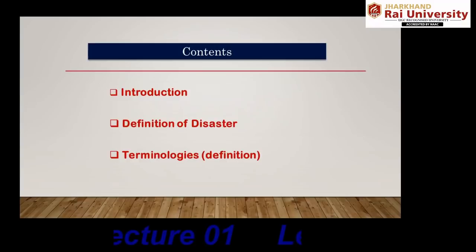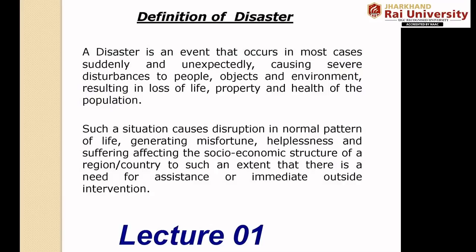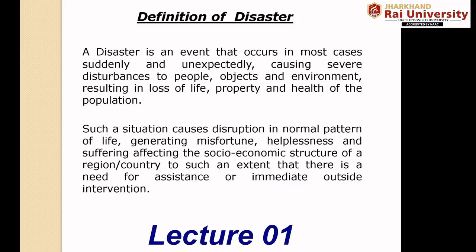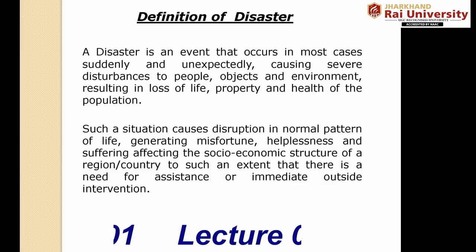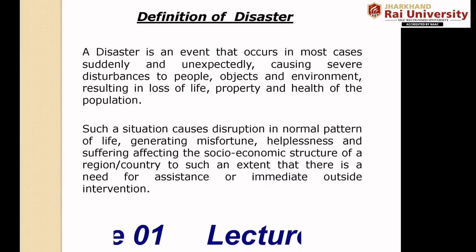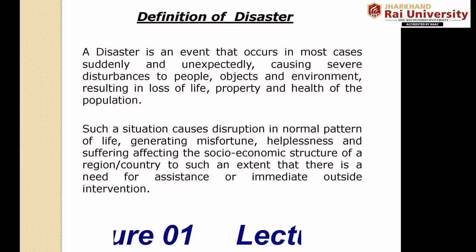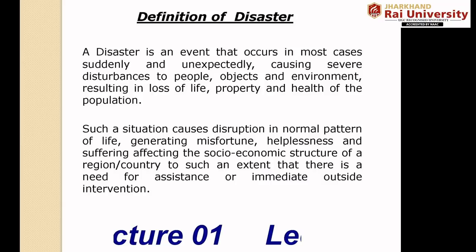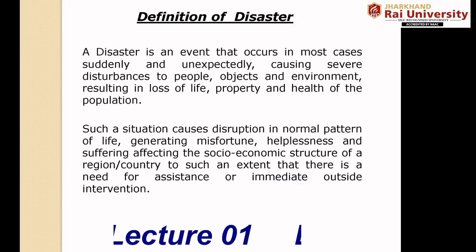Let us start with the definition of disaster. If we split the term, we get 'dis' plus 'aster.' The word is used in French, Greek, Italian and other languages, and gives the meaning that whenever the alignment of stars is in a bad position, a bad event will happen. 'Dis' means bad and 'aster' means star.